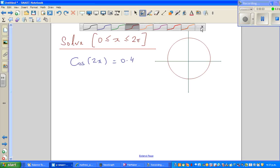Continuing with solving trig equations, this is the equation: cos of 2x, or cos 2x is 0.4. We want to write the answers in radians, so x should be between 0 and 2π.